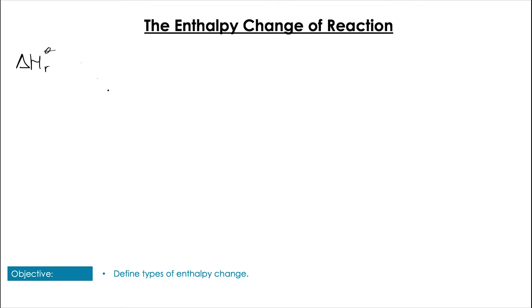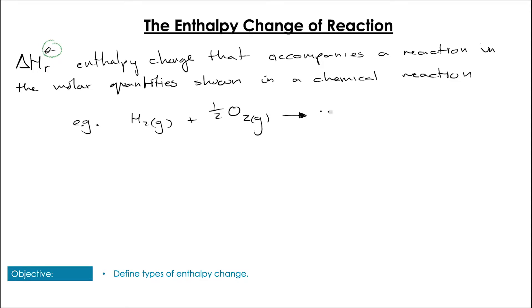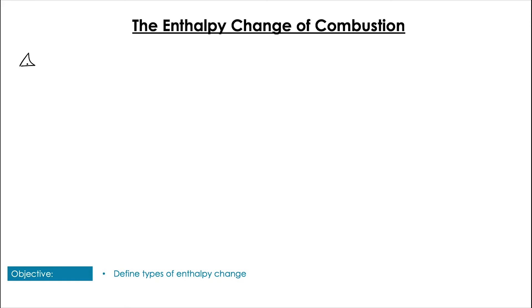Now let's start looking at enthalpy changes. Enthalpy change of reaction, or ΔHr, is quite simply the enthalpy change associated with the reaction in the molar quantities that its stoichiometric equation denotes. For example, one mole of hydrogen plus half a mole of oxygen makes one mole of water, and that has an enthalpy change associated with it of -286 kJ/mol. You'll see a theme throughout these that the name is a little bit of a clue.